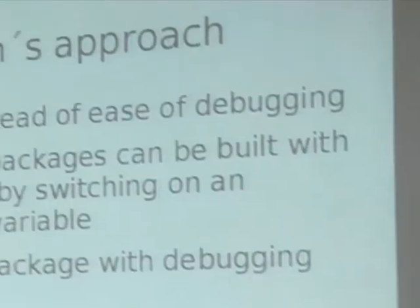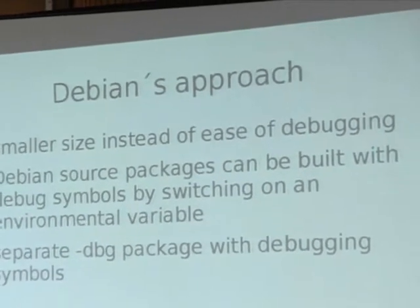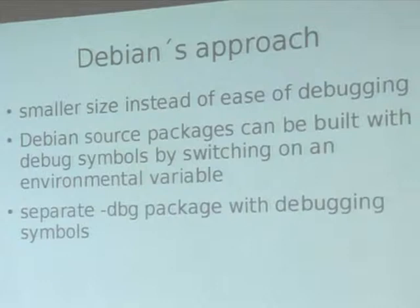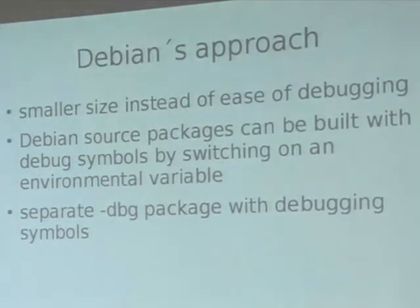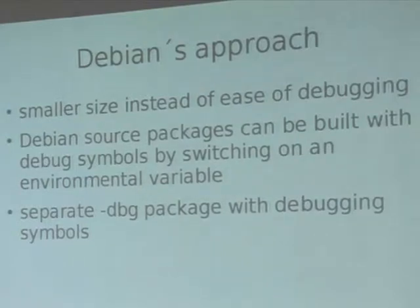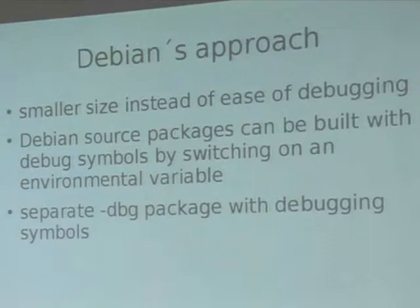Regarding Debian's approach: everyone knows, presumably, that we strip debugging information out of all our compiled binaries. We basically focus on smaller size rather than ease of debugging because everyone wants to download our binaries, and increasing the size of X by 100 megabytes or so per architecture just isn't useful. We do actually build all our packages with debug symbols initially and then strip them out — that lets us debug things while we're trying to build, but it doesn't really help our users.